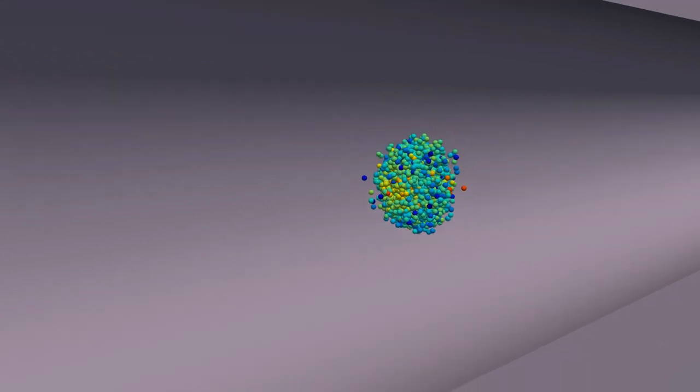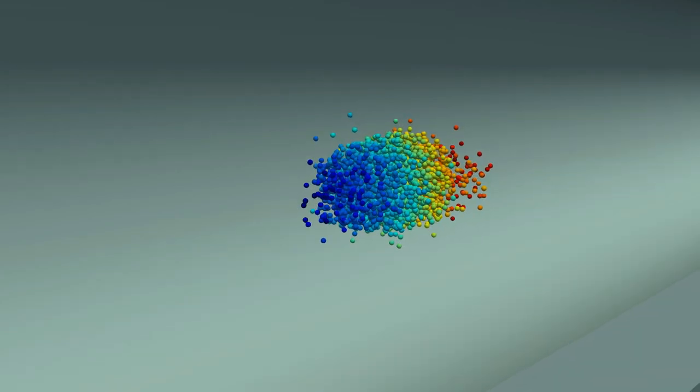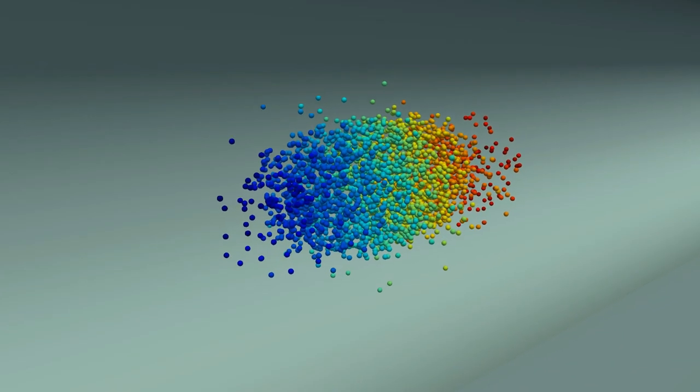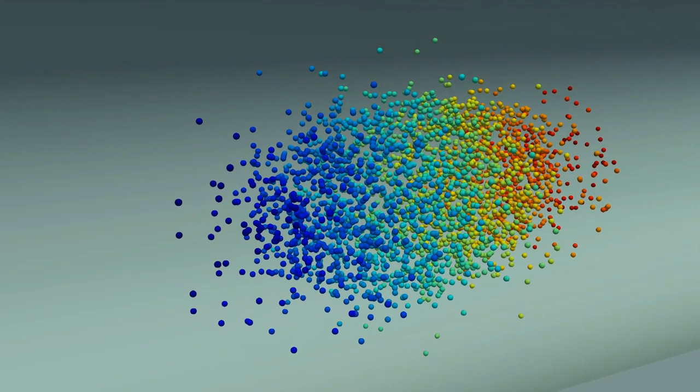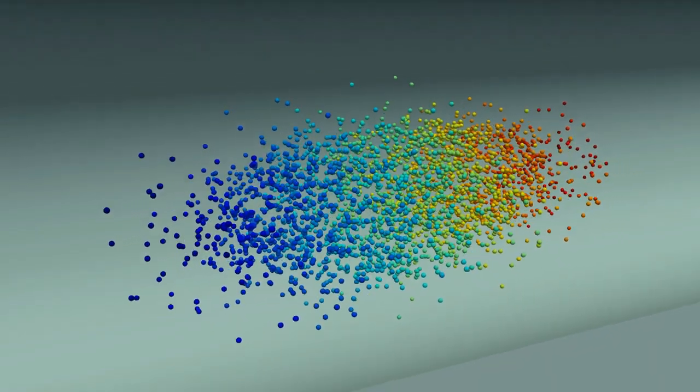From one billion accelerated particles, we cannot afford to lose more than one. The colors show the relative energies of the particles. The redder the particle, the faster it travels compared to its companion.